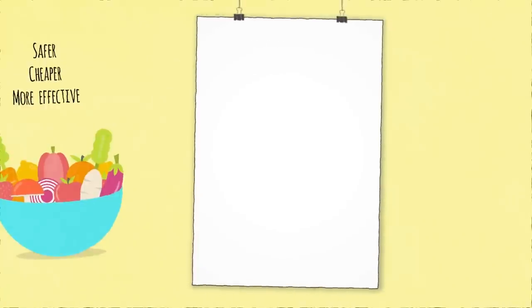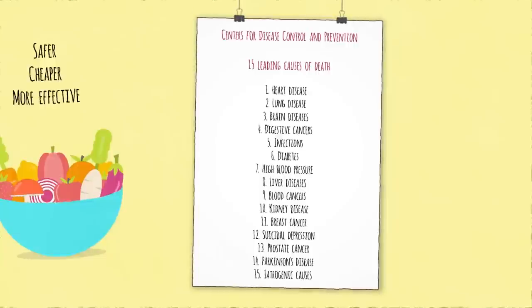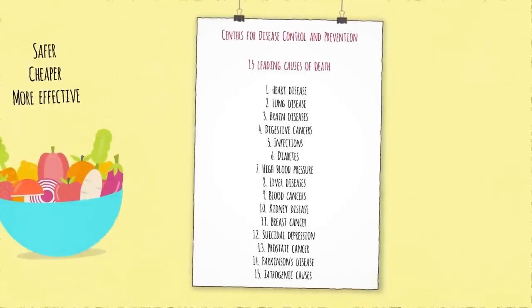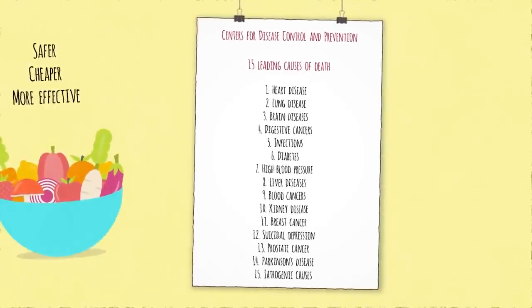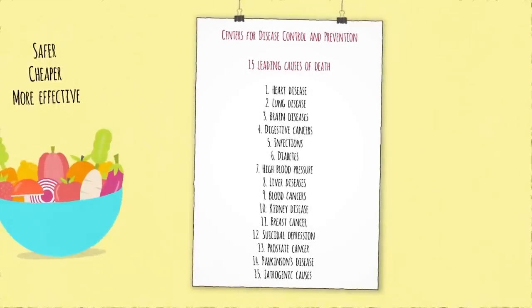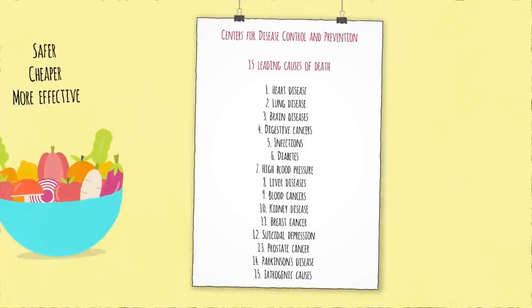Each year, the CDC compiles the 15 leading causes of death, and so I have a chapter on each. How Not to Die from Heart Disease, How Not to Die from Lung Disease, How Not to Die from Brain Diseases, Digestive Cancers, Infections, Diabetes, High Blood Pressure, Liver Diseases, Blood Cancers, Kidney Disease, Breast Cancer, Suicidal Depression, Prostate Cancer, Parkinson's Disease, and How Not to Die from so-called iatrogenic causes, which is essentially death by doctor.